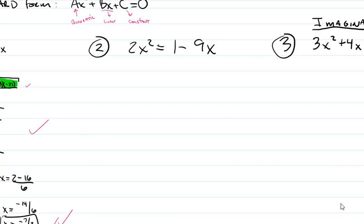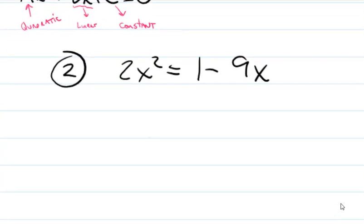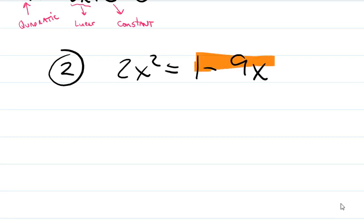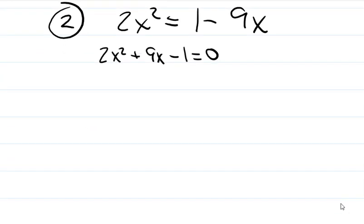Now let's take a look at number two. It's a little different because we have two terms on the right, but again we want to get the quadratic term, linear term, and constant all on the same side. Since our 2x squared term is already positive, we move the other side — 1 minus 9x — over, giving us 2x squared plus 9x minus 1 equals zero. Our a value is 2, b value is 9, and c value is negative 1.